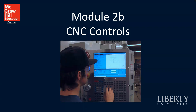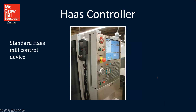Welcome back to Module 2. This is the second part, Module 2B. We talked about CNC systems, and now we're going to talk about CNC controls. We'll have just a few pictures that maybe will help to make it a little bit more real. Since this is an online class, these pictures can be important. So we're looking at a HAS controller — this is a standard HAS mill control device.